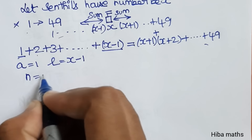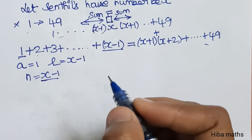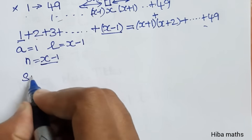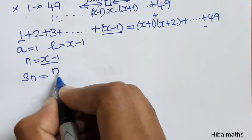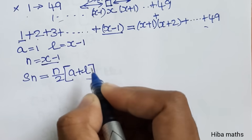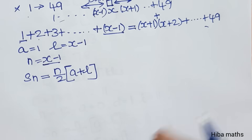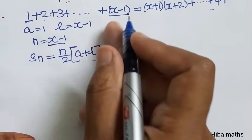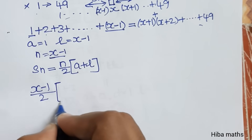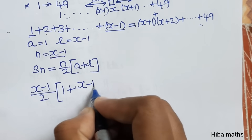We use the sum formula with A plus L. Substituting into the formula: the sum of houses prior to Sendhil's house is x minus 1 terms, using n by 2 into A plus L. Here A is 1 and L value is x minus 1.